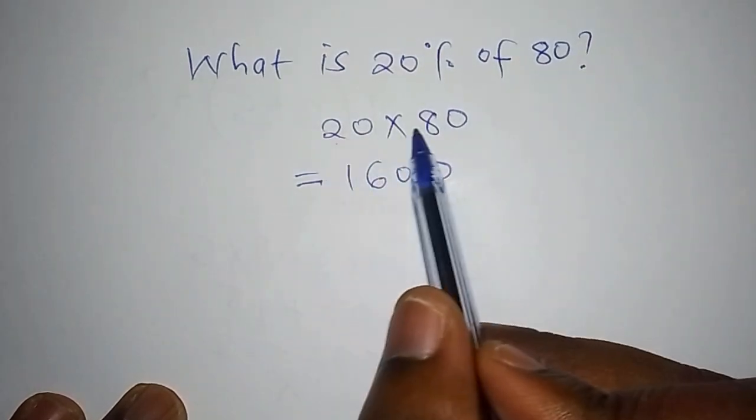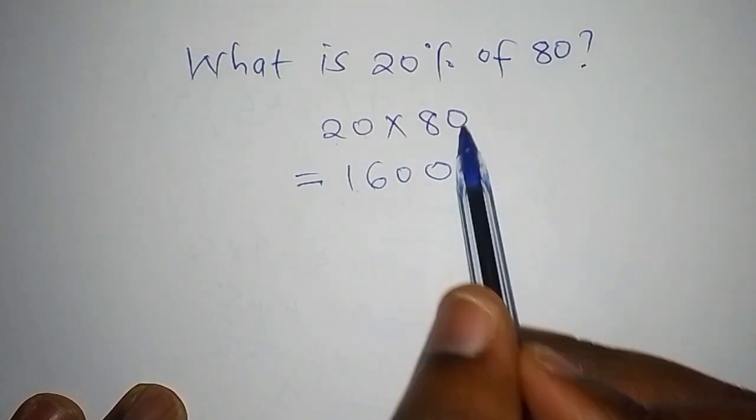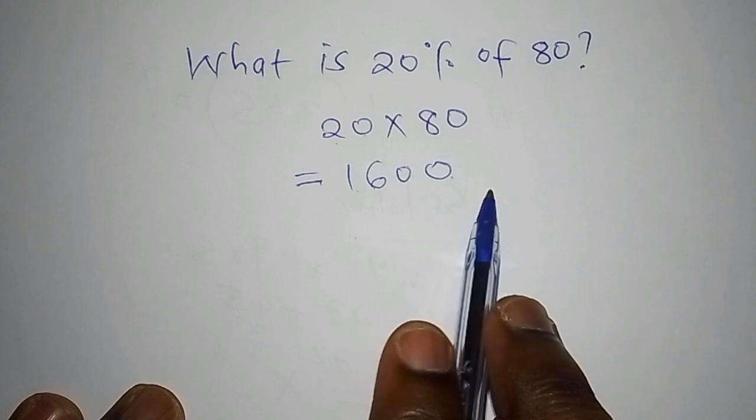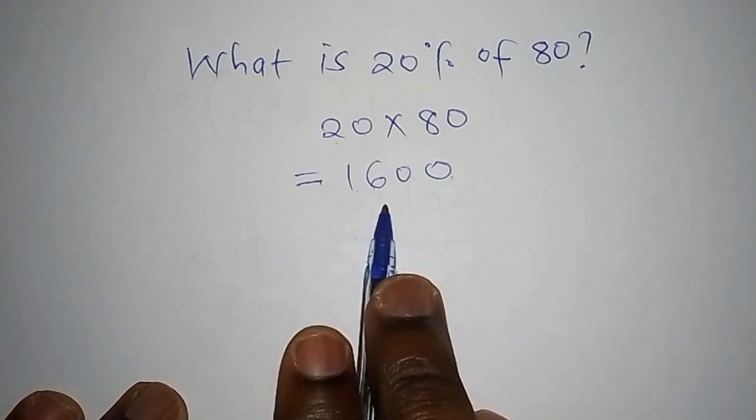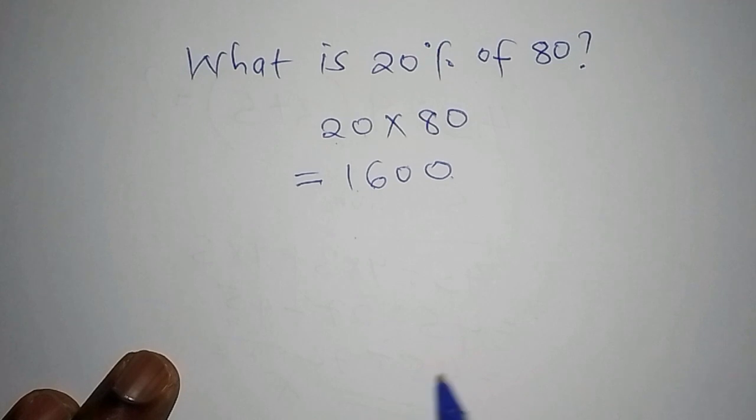We shall have to multiply 2 by 8 is 16, then since you take this 0 and 0 you combine them together so it becomes 1600. Once you get 1600, you are not allowed to stop there.